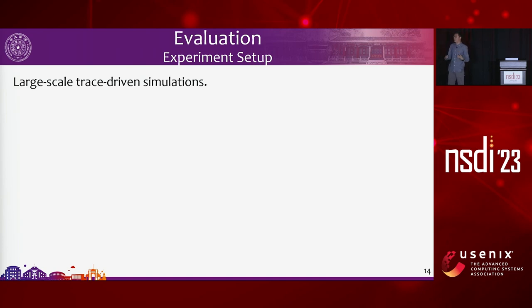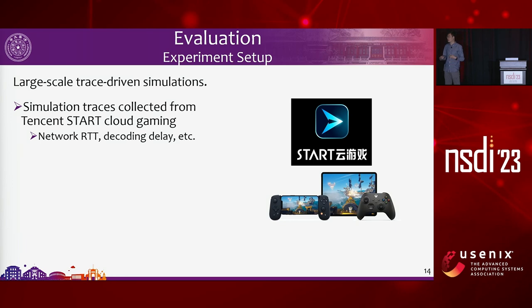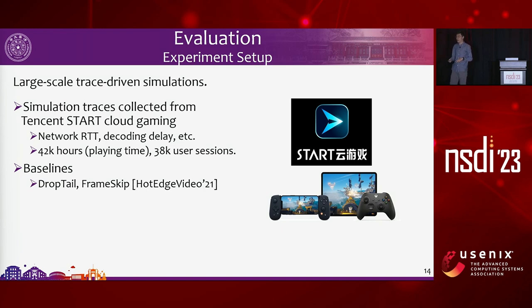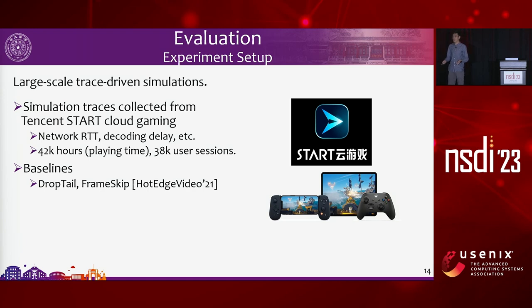For evaluation, we conducted a large-scale trace-driven simulation using Tencent Cloud Gaming data. We collected traces including network RTT, decoding delay, CPU scheduling delay, and others — over 40,000 hours with more than 30,000 user sessions over more than two weeks. We compare AFR against several baselines: drop tail (vanilla solution in WebRTC and open-source frameworks, which drops frames only when queue overflows), frame skip (from our group, which skips frames based on queue length but requires video codec modifications), and ablation studies of different AFR design blocks.